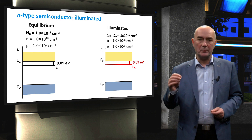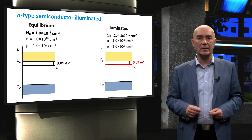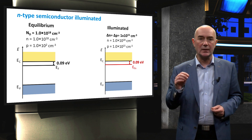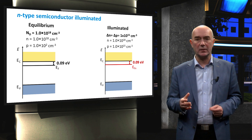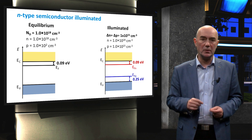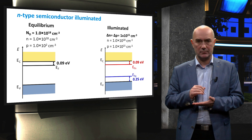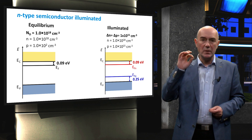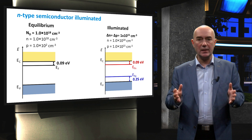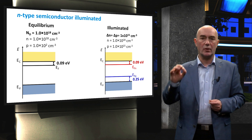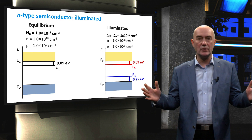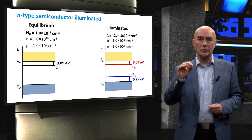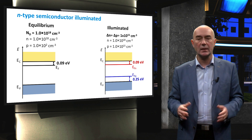However, the quasi-Fermi level of holes has to be added to the band diagram. Using the equation presented earlier, the quasi-Fermi level of holes is calculated to be 0.25 electron volts above the valence band edge. The key takeaway is that with moderate to high doping and this level of illumination, the quasi-Fermi level of the majority carriers does not shift from its equilibrium position, while a new quasi-Fermi level for the minority carriers must be introduced into the band diagram.